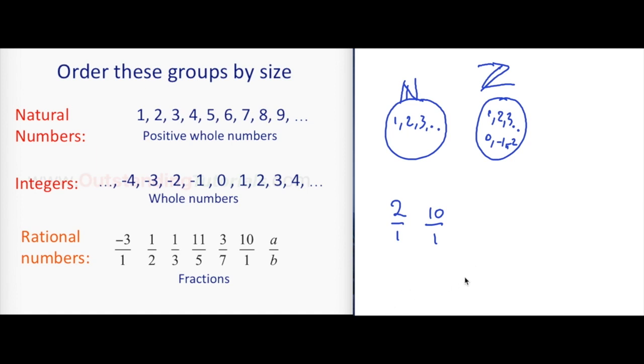So when it comes to size, what I would like you to think about is, well if all those numbers are in here, and this group has more numbers than that, clearly this one's bigger. How can I say that? Because all of these numbers are here, one, two, three, four, five, six, and it has a zero and it has negatives.